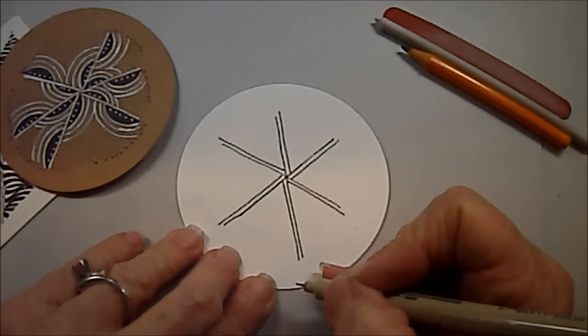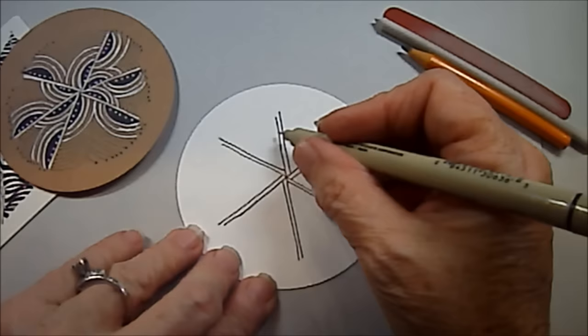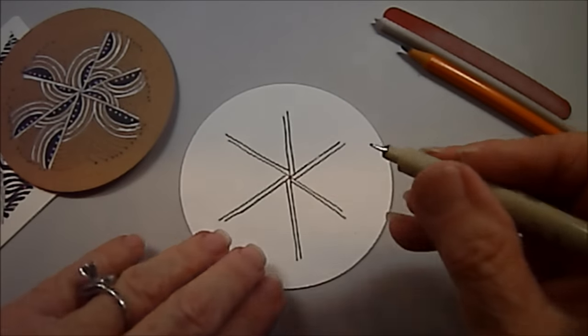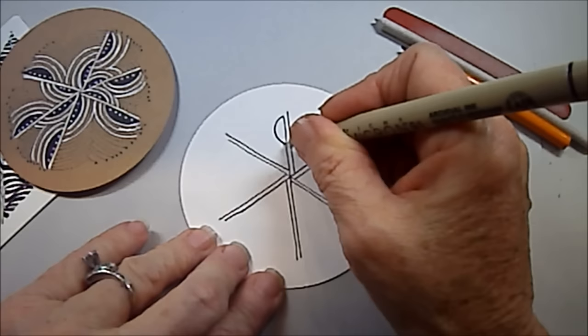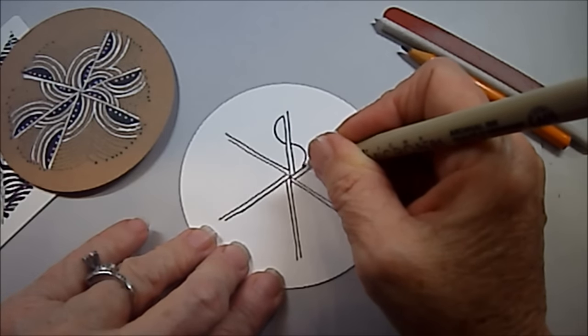So we have our little sections all sectioned up. Now I'm going to start, and I'm going to make a lazy S, kind of, well, an S shape.